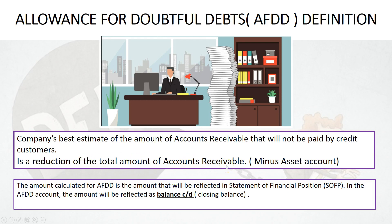AFDD would be considered a minus asset account category. When we say minus asset account category, it means the positive sign would be on the opposite side of asset, which is on the credit.